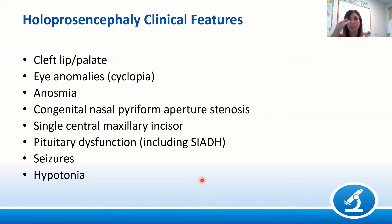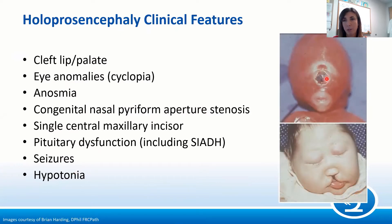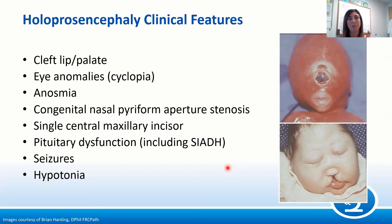In addition to brain abnormalities, there are many facial anomalies seen in holoprosencephaly: cleft lip and palate, eye anomalies including cyclopia, absent olfactory structures causing anosmia, a single central maxillary incisor, pituitary dysfunction, and clinically, seizures and hypotonia. Here is a fetal autopsy demonstrating cyclopia, and an infant with cleft lip and palate. It was proposed that the face predicts the brain — the more severe the facial anomaly, the more severe the holoprosencephaly — though this correlation does not always track perfectly.